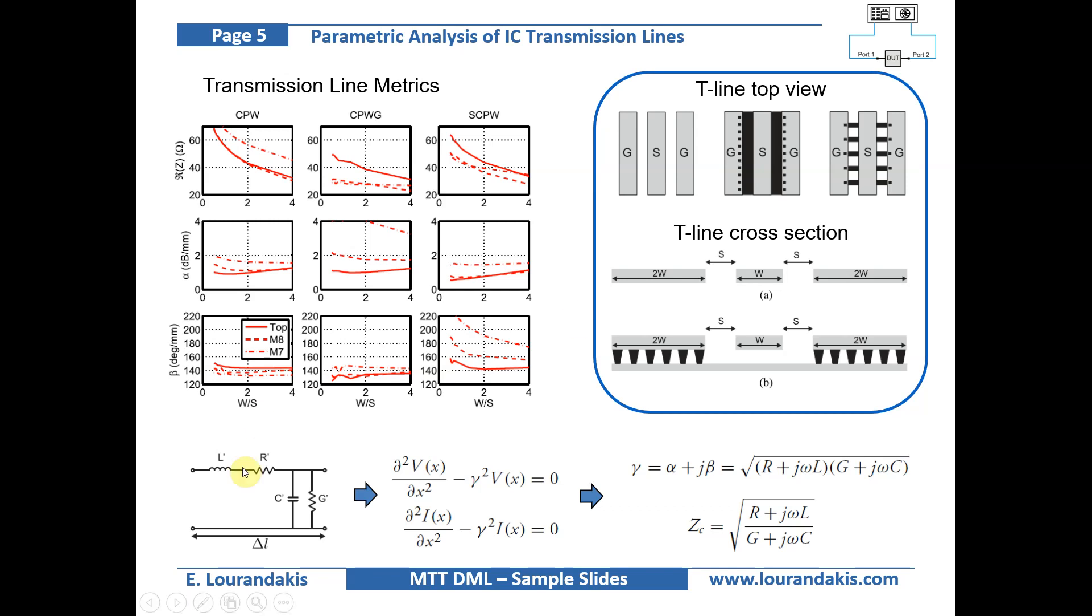On the lower part we see the fundamental transmission line model consisting of the unit cell of length delta L, with per length metrics such as the series inductance and series resistance, as well as the shunt capacitance and shunt admittance.